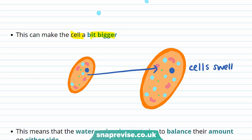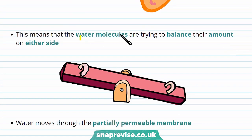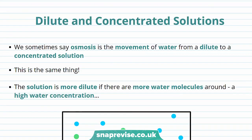During osmosis, water molecules always move from a high to a low concentration. This means that water molecules are trying to balance their amount on either side, so either side isn't too high or too low. Like diffusion, water moves through the partially permeable membrane. So far I've been saying osmosis is a movement of water from a high to a low concentration; we can also say osmosis is a movement of water from a dilute to a concentrated solution — this is the same thing.